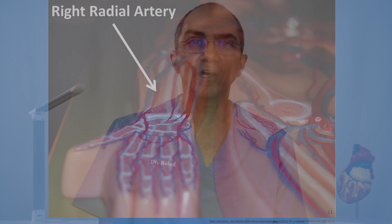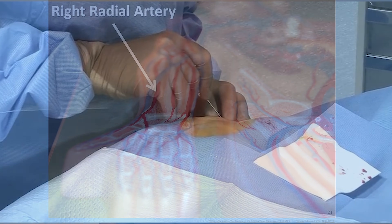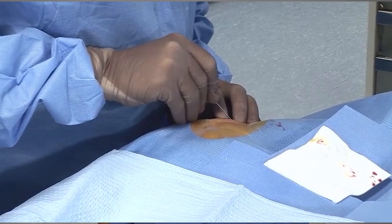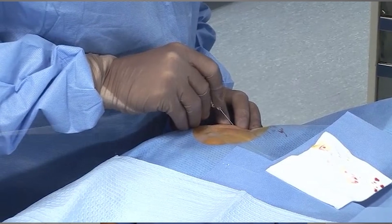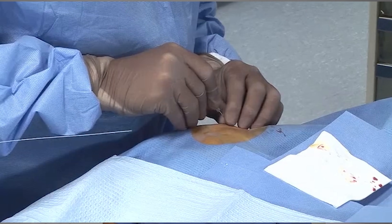Similarly, access to the circulation might be gained through the radial artery, which is shown in this illustration. You can also see the cardiologist obtaining access through this artery as well.